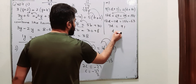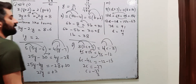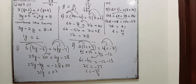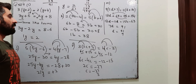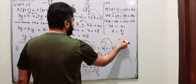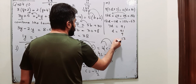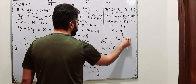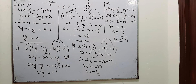Now d is equal to 91 over 7, because this 7 is being multiplied by d on the left side. When you shift it to the right side, it will divide over there. 91 divided by 7 is 13, so d is equal to 13. This is the answer for this part.